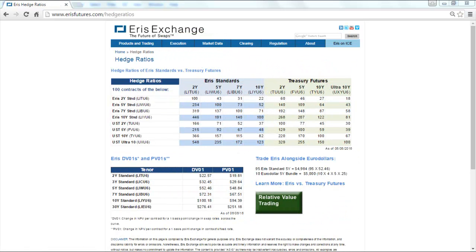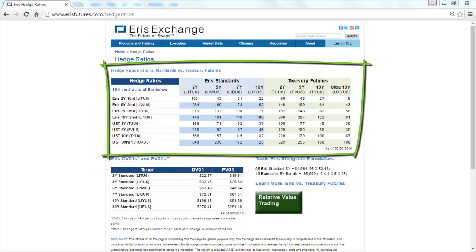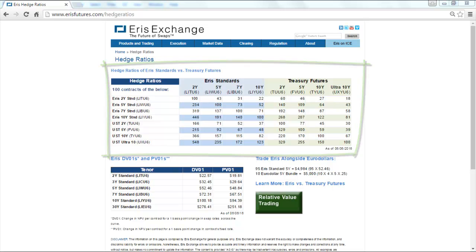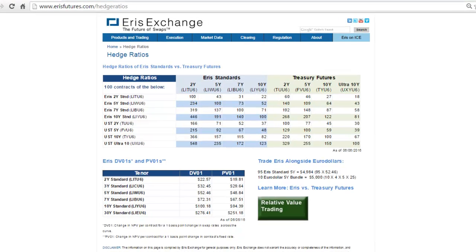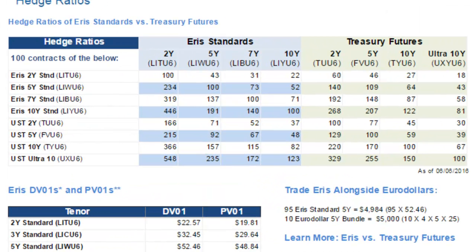Once on the Hedge Ratios page, you will see a chart displaying Eris Futures and Treasury Futures. This chart displays how many contracts are needed to create a DVO-1 neutral portfolio with 100 Eris Futures contracts or 100 Treasury Futures contracts.